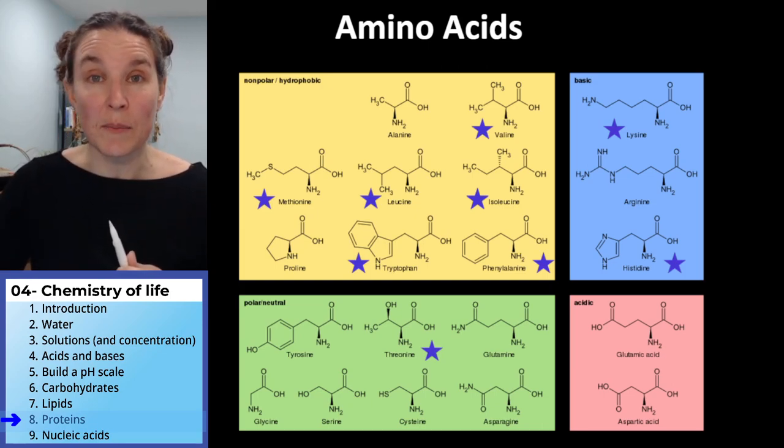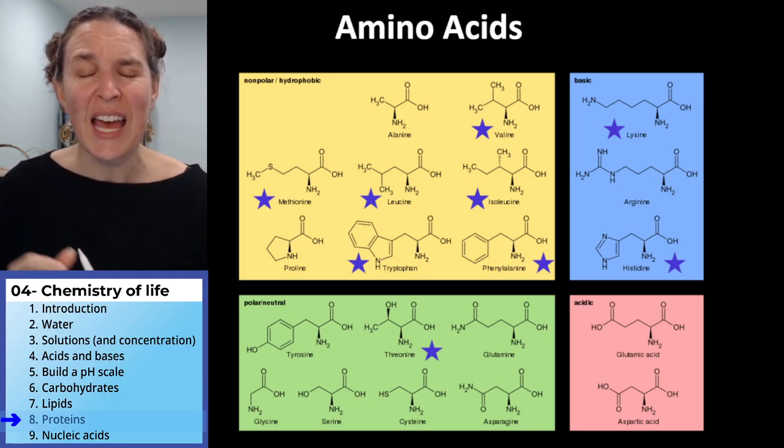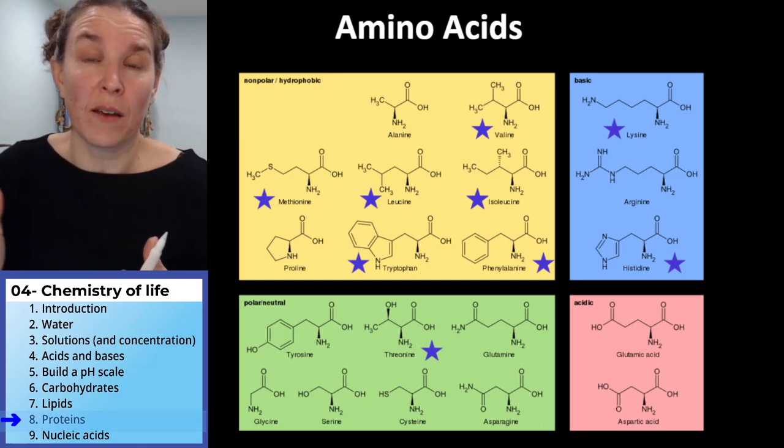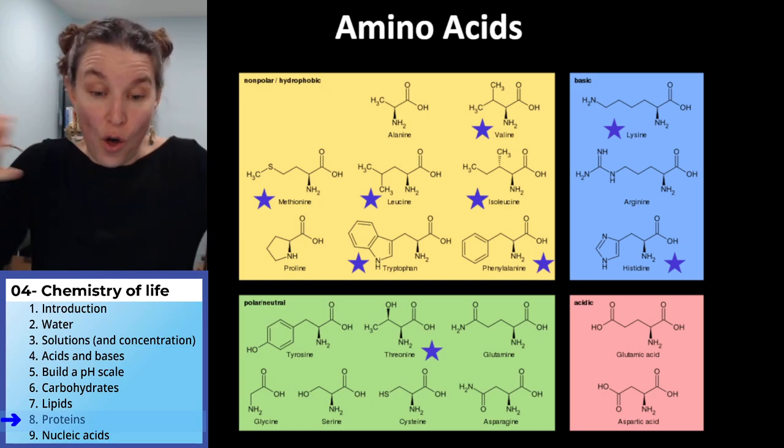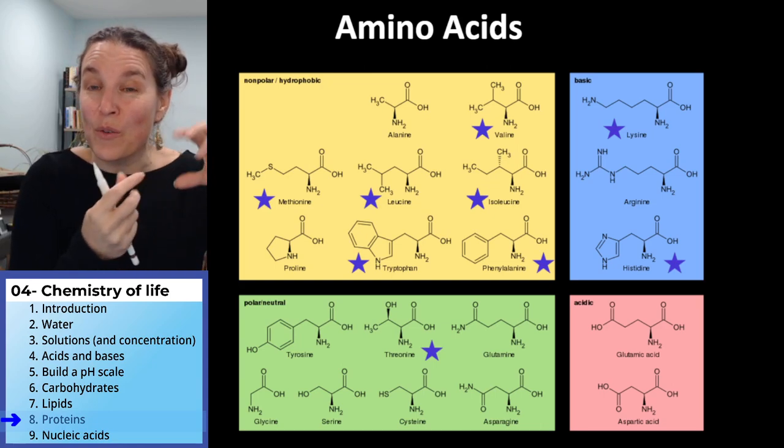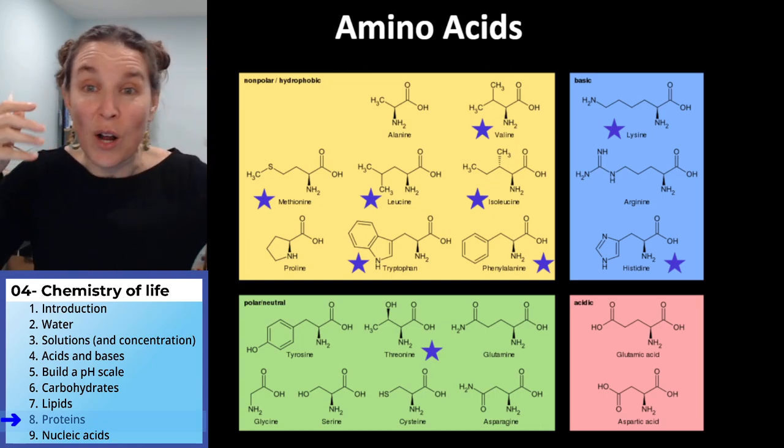There are 20 amino acids that are used to build the proteins in our body. You can think of it almost as if there's 20 different Legos that you can use to build all the things: all the muscle things, all the receptor things, all the hormone things, all the neuron things.